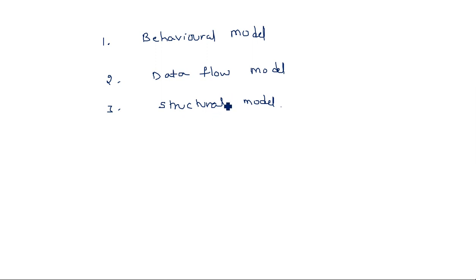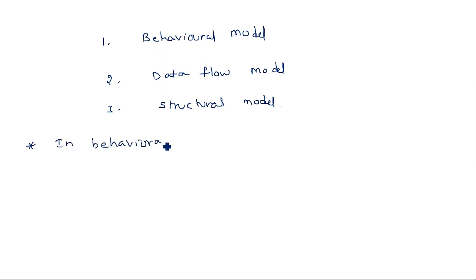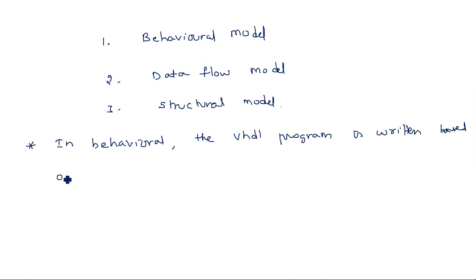In the behavioral model, the VHDL program is written based on the truth table. In the data flow model, the program is written based on the boolean expression — the equation relating input and output. In the structural model, the VHDL program is written based on the internal architecture. In behavioral model, the vhdl program is written based on truth table.